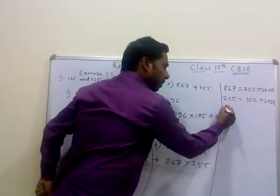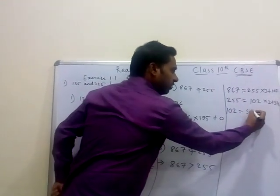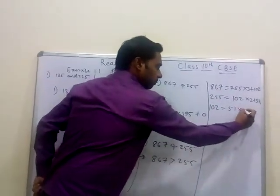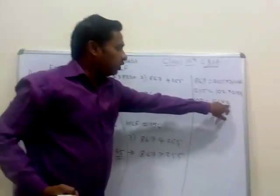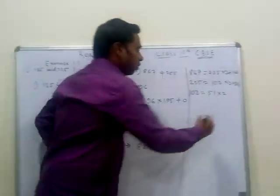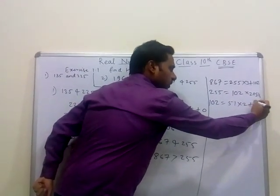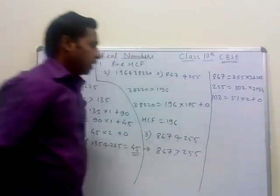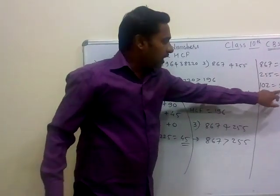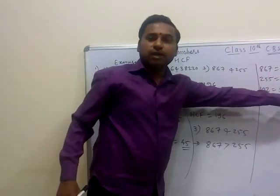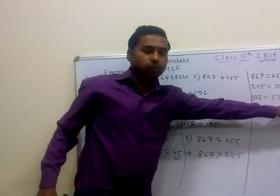Now we take 102 here. 51 goes into 102 exactly 2 times: 51 × 1 = 51 and 51 × 2 = 102. The remainder is 0. So here we found that 51 was the last number which gave us remainder 0 after division.